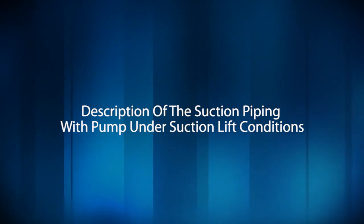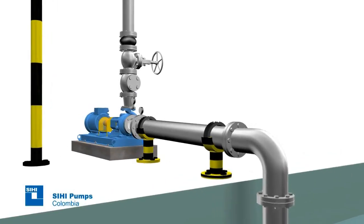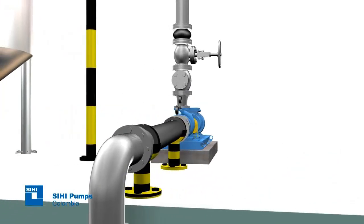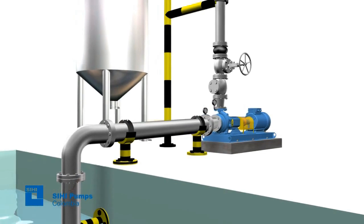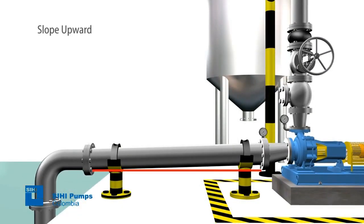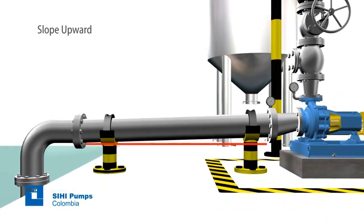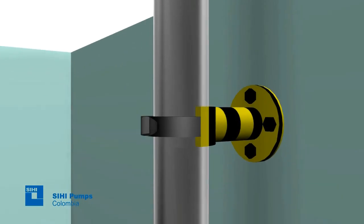Description of the suction piping with pump under suction lift conditions. When the installation is designed to work using the suction lift method, in other words, with the tank from which the liquid is taken below the pump level, the suction pipe must be mounted with a slight slope upward towards the pump to avoid air pocket formation.